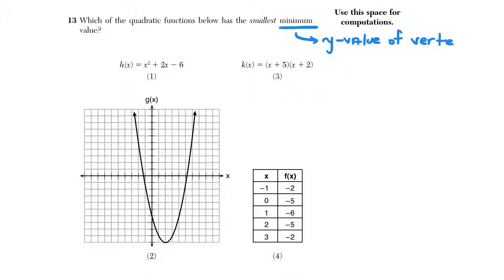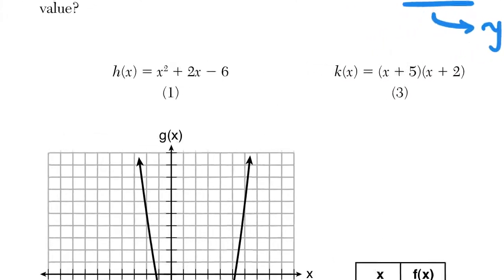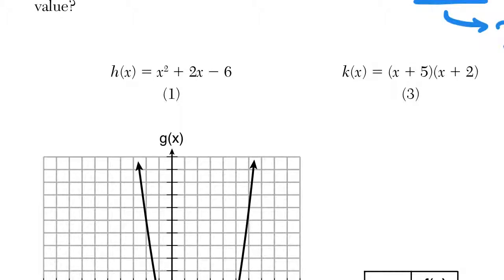So this is one where we do have to look at each choice, unfortunately. We can't answer this outright. Luckily it is multiple choice, so we can utilize our calculator to help us find the vertex. We don't have to do it by hand. The formula we would use there would be negative b over 2a.